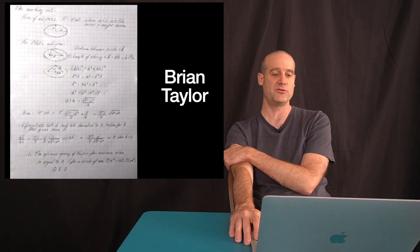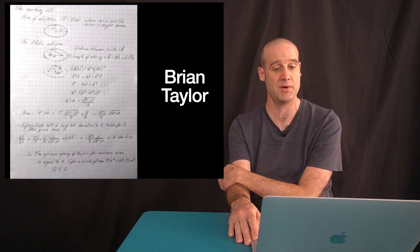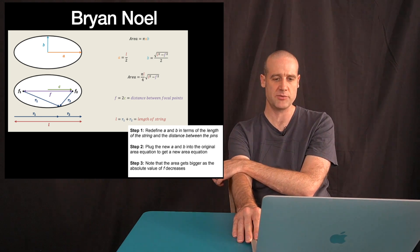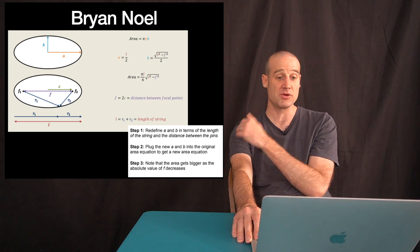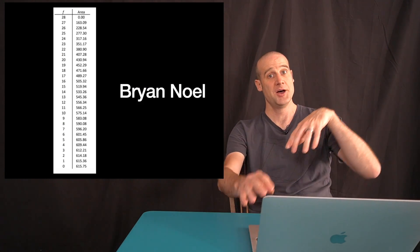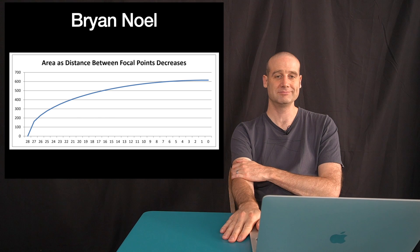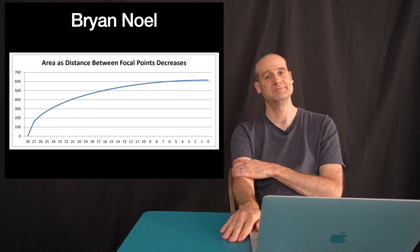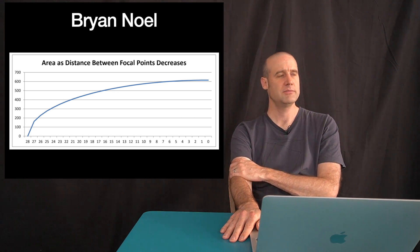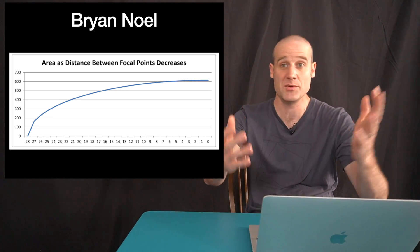Brian got Deanna's award for neatest handwriting — apparently we're handing that award out now. Well done, Brian. They did some great working out with loads of diagrams. Not only that, they did a table for all the possible areas you get as you vary where the two focal point pins are, and then they plotted it. You can see it flattens out, and zero is the maximum area.